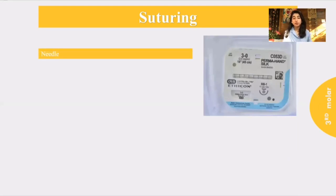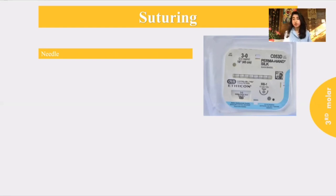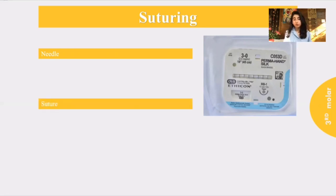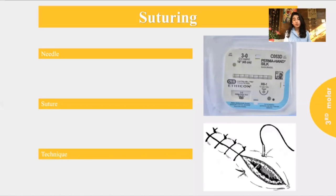For the suturing, the most common needle used is the curved needle, which allows passage in a small area, unlike the straight needle. The most common sizes are the three-eighths and half-circle curved needle. The most common suture used is 3-0 black silk non-absorbable, and the most common technique is the simple interrupted technique.